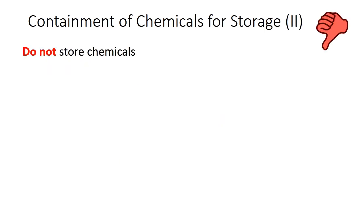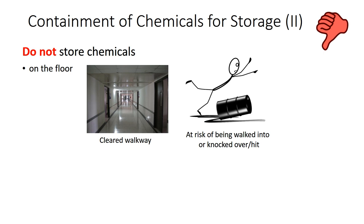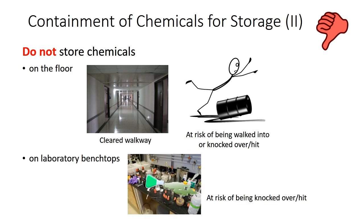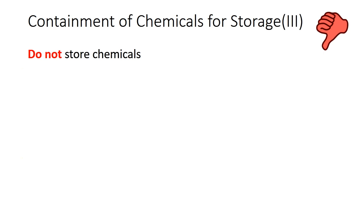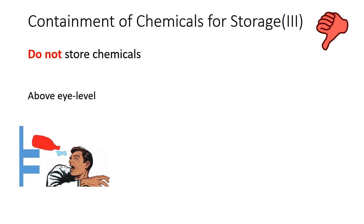Do not store chemicals on the floor, as passageways and exits should be kept free from containers, especially glass containers. Containers on the floor are also at risk of being walked into or knocked over. Do not store chemicals on laboratory benchtops, as incompatible chemicals may be inadvertently placed next to each other, knocked over, or not protected from a laboratory fire. Each chemical should have a designated storage area and be returned after each use. Do not store chemicals above eye level, as chemical contents can splash onto the face when containers fail or break. Chemicals should be stored within sight and reach.